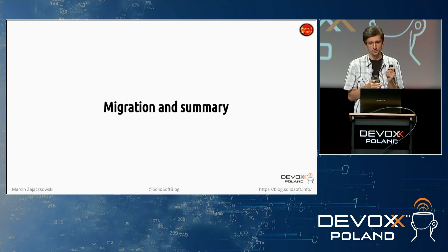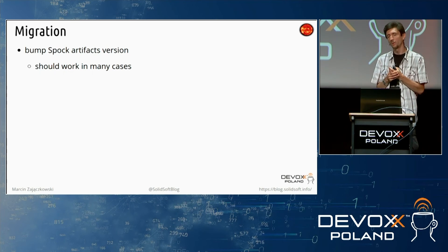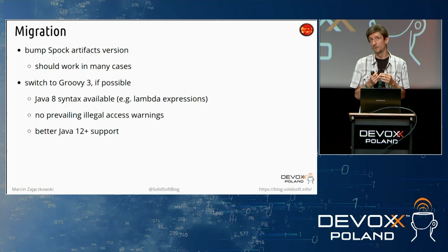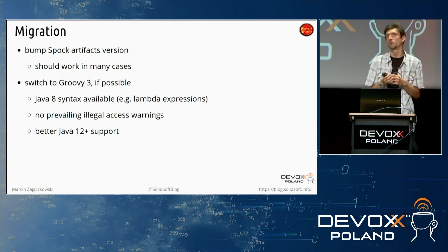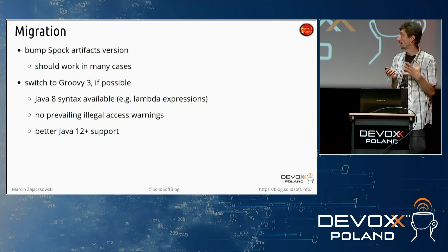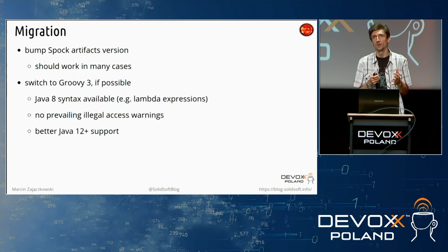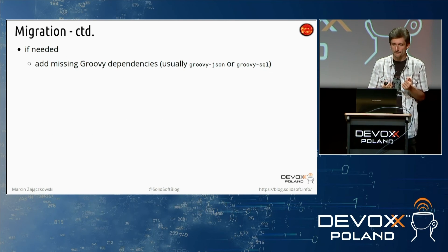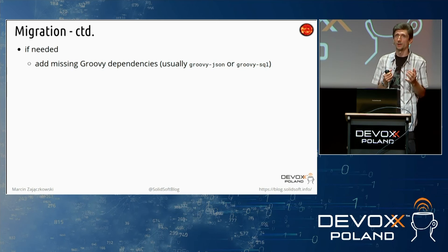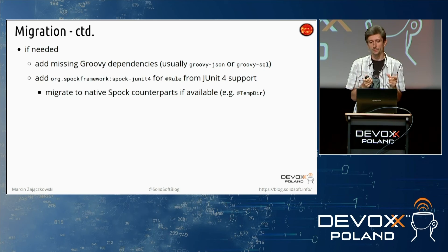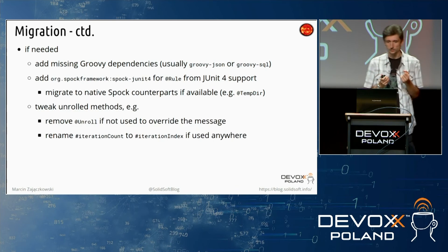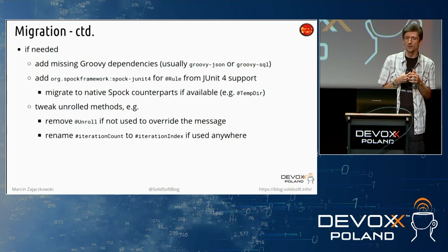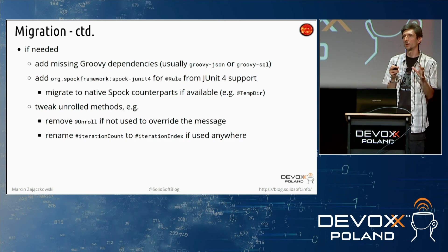Let's start the last part of this presentation. Migration to Spock 2 is usually straightforward — very often, bumping the artifact version can be enough. Once done, in the second step it is advised to try to switch from Groovy 2.5 to Groovy 3. With that, you can have nicer support for modern Java versions; among others, there are no illegal access warnings which are prevalent on every compilation with older Groovy. Sometimes you might need to add extra Groovy modules — already covered that topic. And similarly, for JUnit rules and JUnit annotations, you need to add Spock JUnit 4 to your project. As tests are unrolled by default, you can remove all Unroll annotations which do not have placeholders.